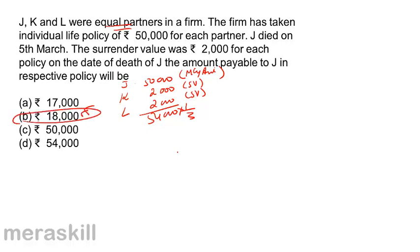So 18,000 would be J's share of the life policy — whether joint life policy or individual policy — which would be credited to J's account. The maturity amount of the deceased partner's policy and the surrender value of the individual policies of the other partners: the deceased partner's share in this total amount will be credited to his capital account.